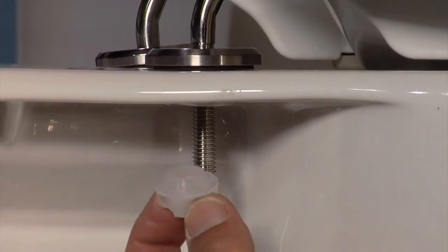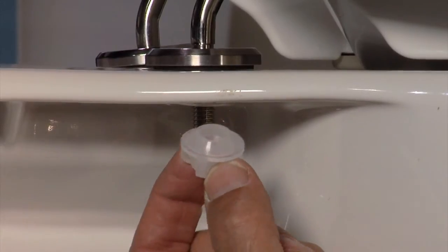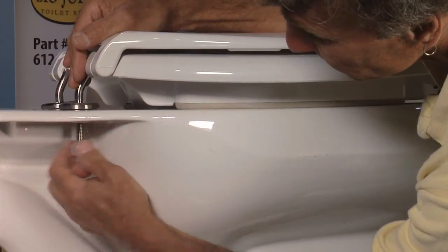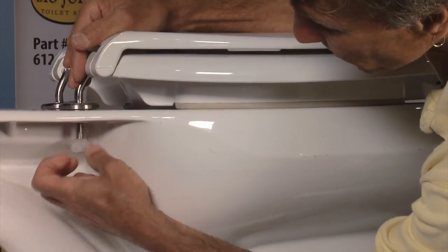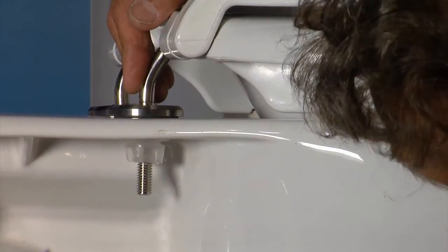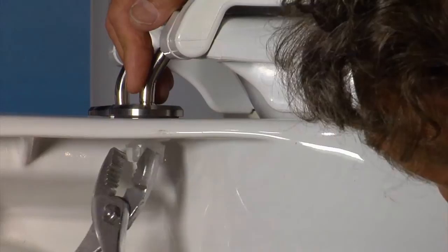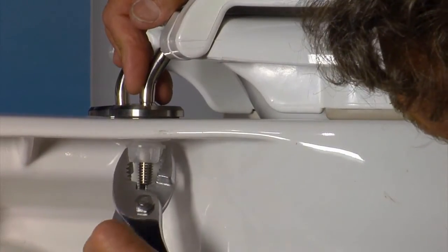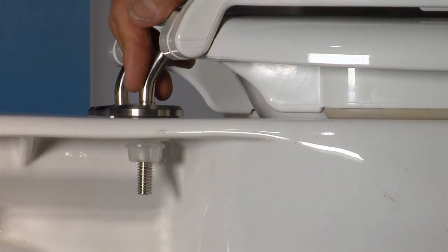Take one of the nylon nuts with the beveled side up and screw it onto the hinge. When the nut is snug, take a pliers and give it another quarter turn. Do not over tighten. Do the same thing on the other side.